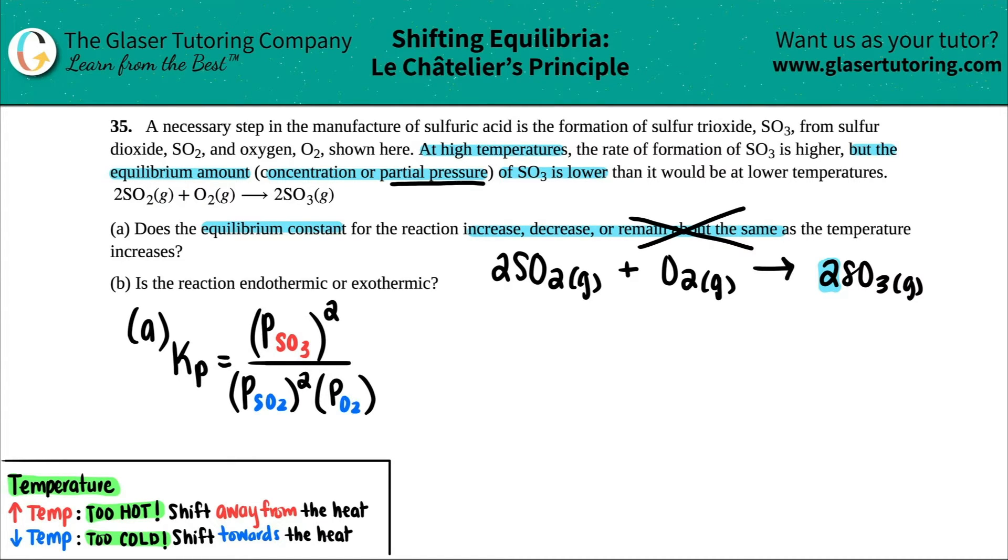So now we want to know what's going on when the temperature increases. Well, we have to figure out what's going on with the SO3, whether it's increasing as the temperature increases or is it decreasing as the temperature increases. We need to find that information from all this information that they told us. Well, they did say over here that at high temps, that means the temperature is increasing. At higher temps, you're raising the temperature.